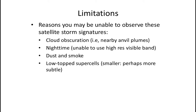As for limitations, keep in mind that most storms will not exhibit these satellite-observed signatures. Of the storms that do have these signatures, there are a variety of reasons why you may be unable to observe them from satellite — for example, cloud obscuration from other nearby anvil plumes, nighttime preventing use of the high-resolution visible band, and dust and smoke as common obscuration sources. Also, if you are looking at low-top supercells, everything is smaller and it can be quite a bit more subtle to observe these signatures.